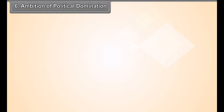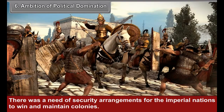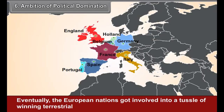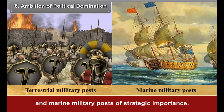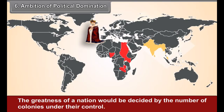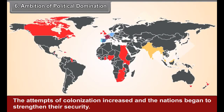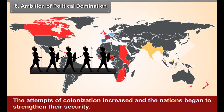Sixth, ambition of political domination: There was a need of security arrangements for the imperial nations to win and maintain colonies. Eventually, the European nations got involved in a tussle of winning terrestrial and marine military posts of strategic importance. Some nations had been trying to expand their imperial rule for national pride and fame. The greatness of a nation would be decided by the number of colonies under their control. This imperial expansion created a sense of suspicion among the European nations, and the nations began to strengthen their security.